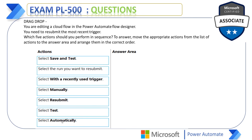The first step is select Test. The second step is select Automatically. The third step is select with a recently used trigger. The fourth step is select the run you want to resubmit — we have seen there are many runs, so we select the most recent one. And then finally, the fifth step is select Save and Test to execute.